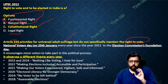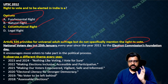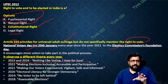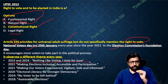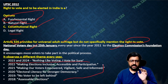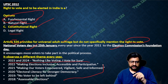Some more GK: National Voters Day is on 25th January because that is the day when the Election Commission was formed. Different years have different themes. 2023 and 2024 they have kept the theme constant — 'Nothing Like Voting, I Vote for Sure' — which I think is the first time the theme was kept the same for two years. Before that, every year from 2018 to 2022 it was a different theme.